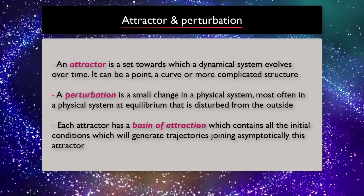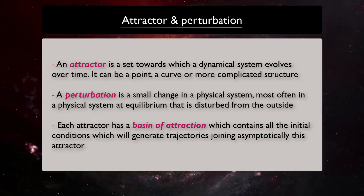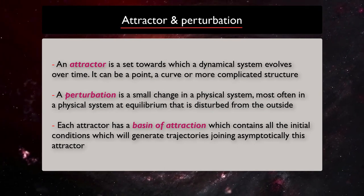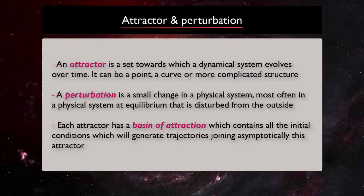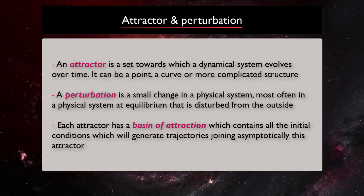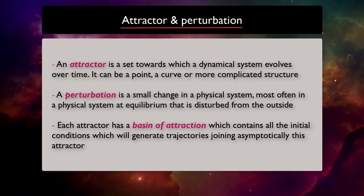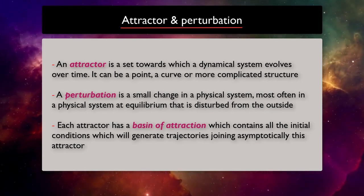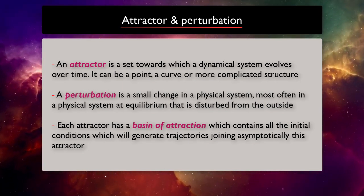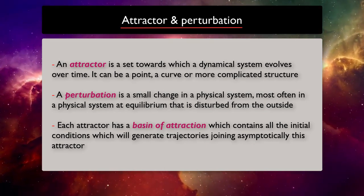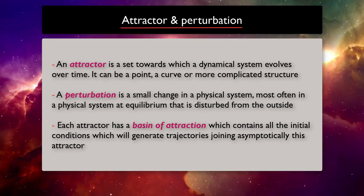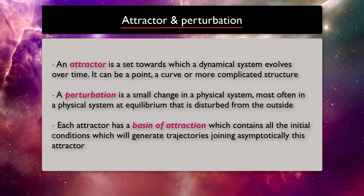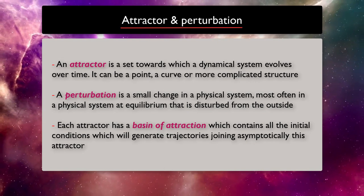A set towards which a dynamical system evolves over time called attractor. It can be a point, a curve, or a more complicated structure. And a perturbation is a small change in a physical system, most often in a physical system at equilibrium that is disturbed from the outside. Each attractor has a basin of attraction, which contains all initial conditions that will generate trajectory joining asymptotically this attractor.